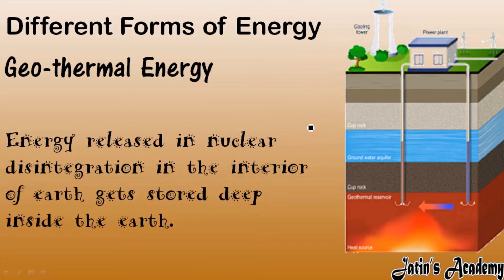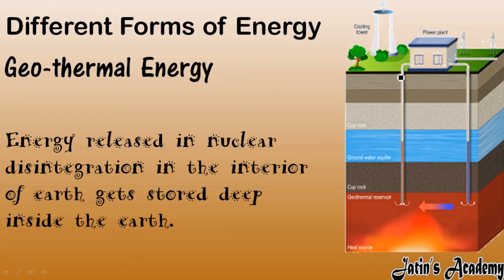Next we have geothermal energy. In the earth's crust, due to nuclear disintegration in the interior part of the earth, there is lava and magma which comes into contact with water bodies, making the water very hot. This hot water is used by power plants to generate energy — this is called geothermal energy, released deep inside the earth.